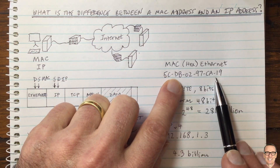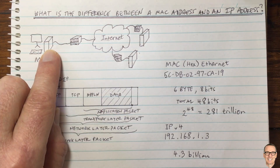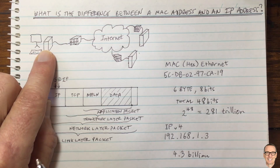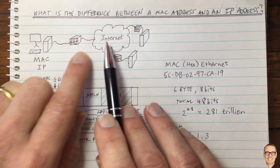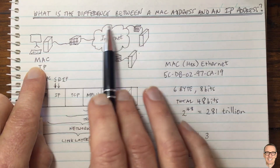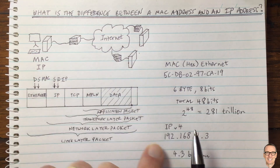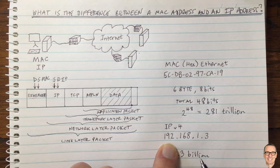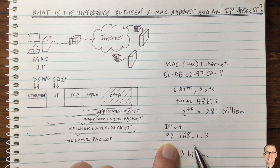If the internet were based entirely on MAC addresses, it would have to store massive routing lookup tables for all devices. Whereas with hierarchical IP addresses, routing tables can be stored and managed hierarchically, making routing much more efficient. These are two of the important differences between the MAC and IP address.